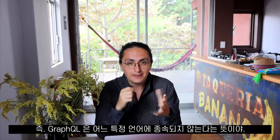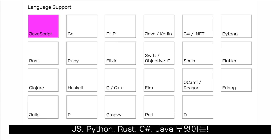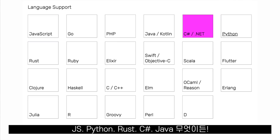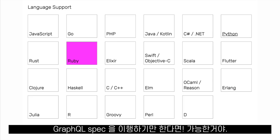This means that GraphQL is not actually bounded to any specific language. You can use GraphQL in JavaScript, Python, Rust, C Sharp, Java — whatever you want, as long as somebody implemented the GraphQL spec.